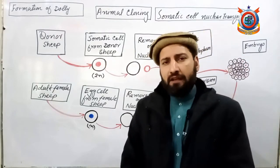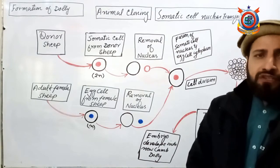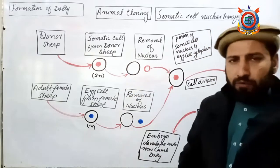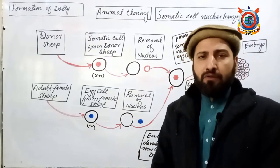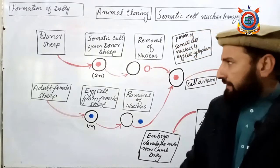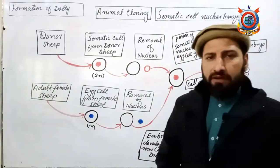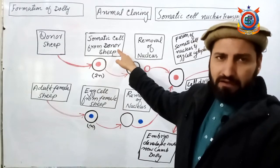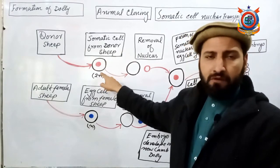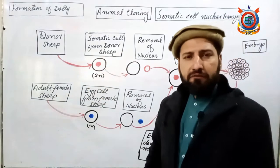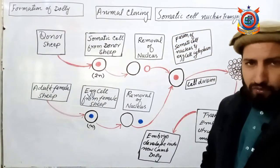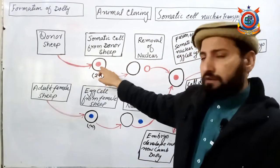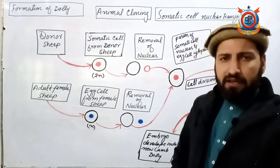Tariqa hum explain karte hain with the help of formation of Dolly — yani Dolly sheep ko kaise clone kiya gaya tha, uska procedure kya tha. Pehle step mein, donor sheep ke udder se somatic cell ko hasil kiya jata hai. Somatic cell body ke kisi bhi part se li ja sakti hai aur us mein 2n number of chromosomes hote hain — yani us organism ke chromosomes ka poora set. To pehle step mein ek donor sheep se ek donor somatic cell ko liya jata hai.